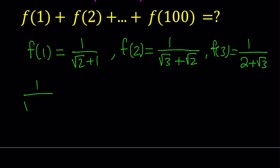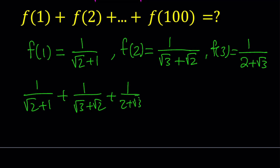So take a look at the sum: 1 over root 2 plus 1, plus 1 over root 3 plus root 2, plus 1 over 2 plus root 3, and so on all the way up to 1 over square root of 101 plus 10, which is the square root of 100.